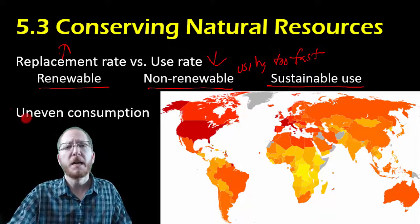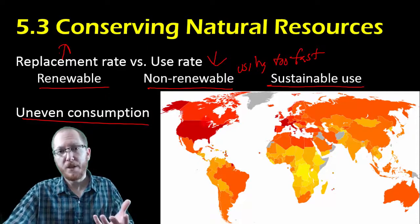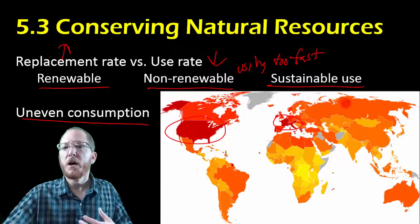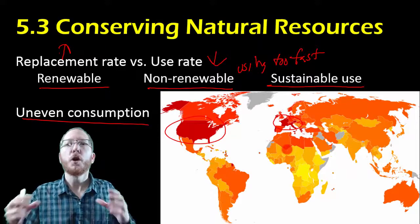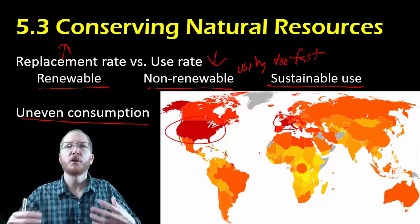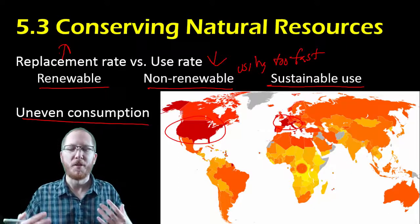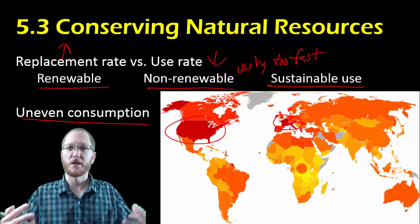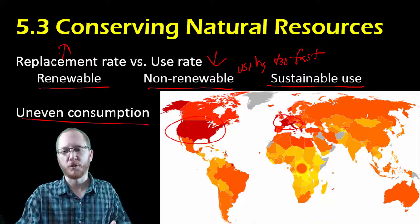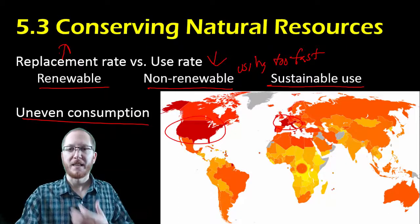The uneven consumption idea comes back to developed versus developing countries. When you look at consumption on a map, the more red a country is, the more resources it uses. The U.S., parts of Europe, Canada, Australia, and parts of the Middle East have very high consumption rates, while many yellow countries use very few resources. This is not every person on the planet using too much — often it's the richest people causing problems for the rest. We really have to focus on wealthier countries to curb usage and increase recycling and efficiency.